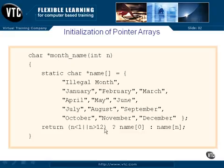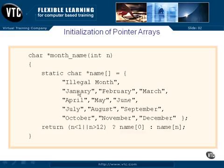If this is not true, that means that n is, in fact, between 1 and 12 inclusive. So we will return name sub n, which will be 1, 2, 3, 4, 5, 6, and so on down through 12. And this function works the way we expect it to.